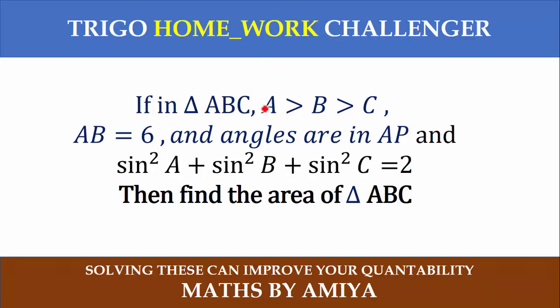A is the biggest angle and AB is the side 6 units and angles are in AP, and sin²A + sin²B + sin²C value is 2, so what will be the area of the triangle?